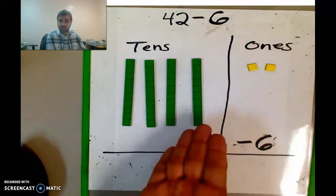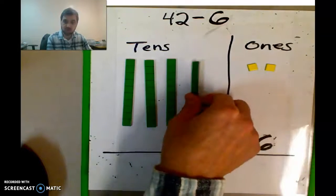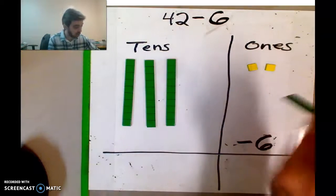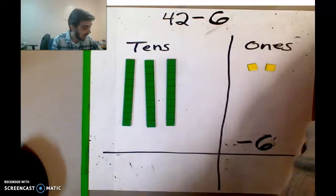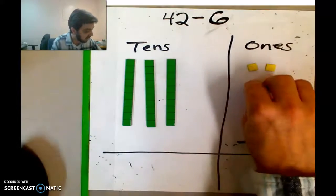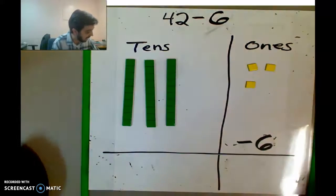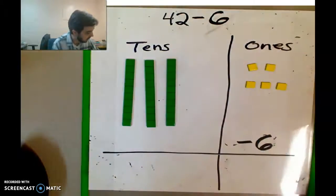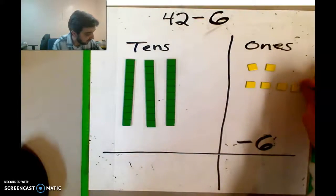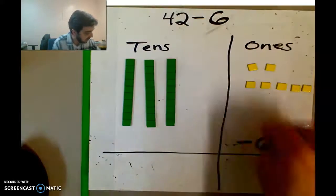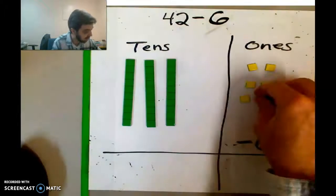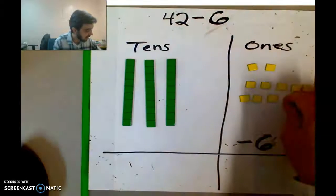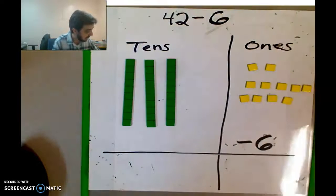We can take this bag of 10 Skittles and open them up. There's 10 Skittles in there. So I'm going to open it up and pour them out. And out come the 10 Skittles out of that bag. I'm just putting them in nice little rows here: one, two, three, four, five, six, seven, eight, nine, 10.